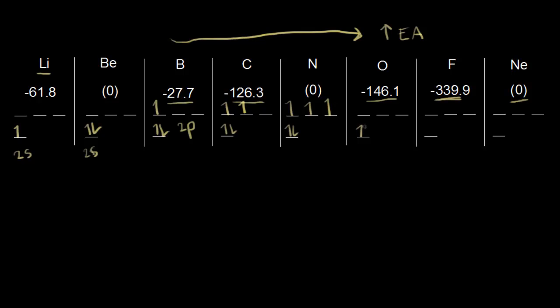Oxygen has six valence electrons, fluorine has seven — and for these last two we've had to start pairing electrons up in the 2p orbitals. Finally, neon has eight valence electrons, completely filling all the orbitals in the second energy level. So to explain the general trend for electron affinity, let's look in more detail at oxygen and fluorine.